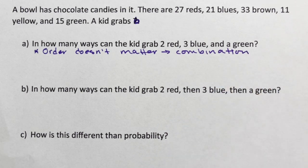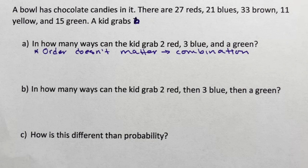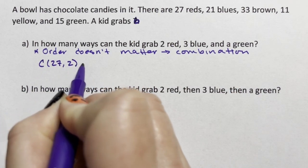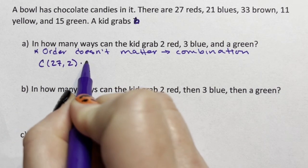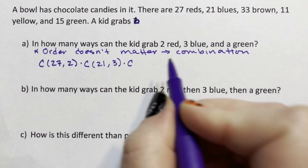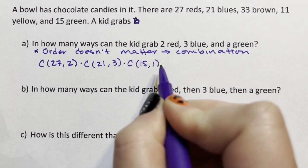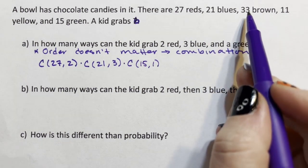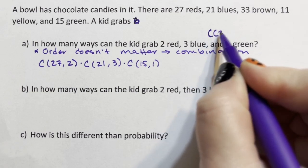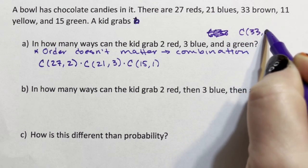I think one of the struggles with this unit when you're learning about combination and permutation is you're always combining items. When I write out combination in my class notes, I say the combination of 27 reds taken two at a time, and you multiply until you get to all six. So times the combination of the 21 blues taken three at a time times the combination of the 15 greens taken one at a time.